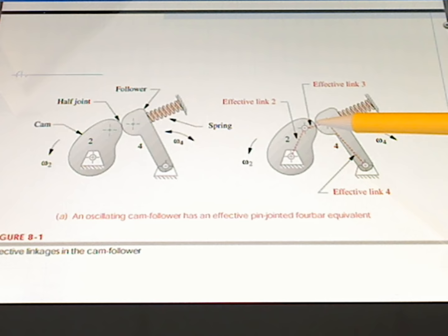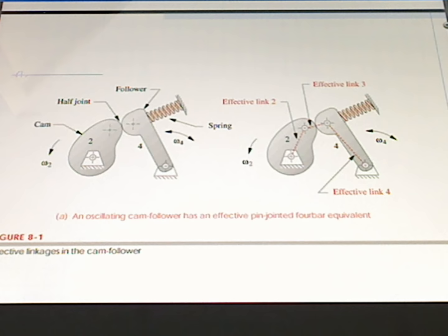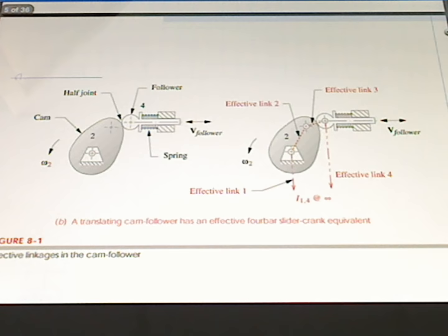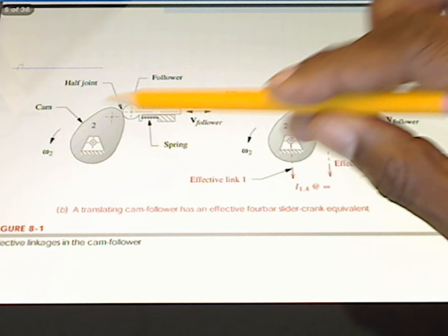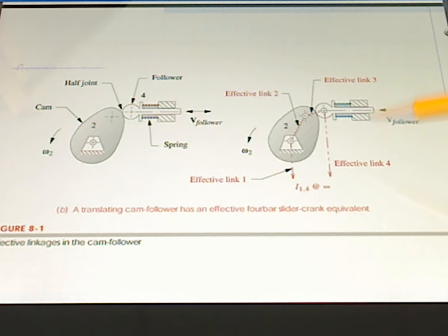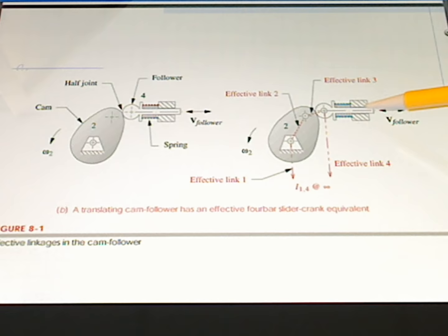As link 2 moves, this red line going from the current center of the cam to the current center of the follower changes its length. This is just an example of how cams are like a four-bar with variable length links. Here we have a translating follower — the follower moves back and forth along this direction. For this translating follower, the analogy to a four-bar linkage would have an effective link at infinity, because at infinity we have a straight-moving follower going back and forth.